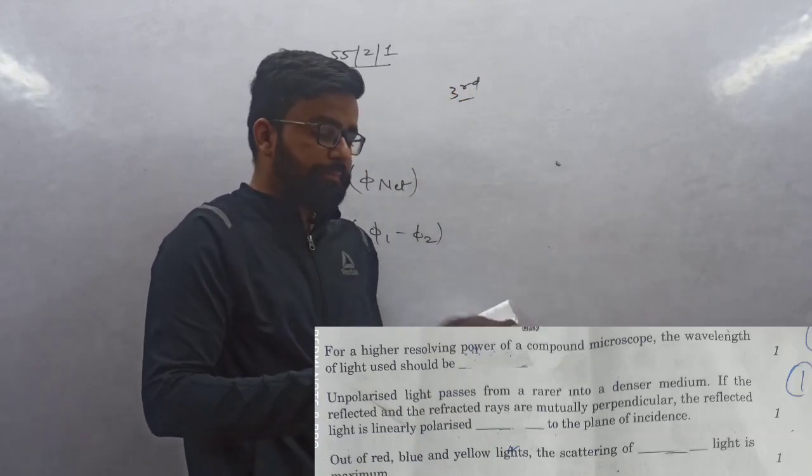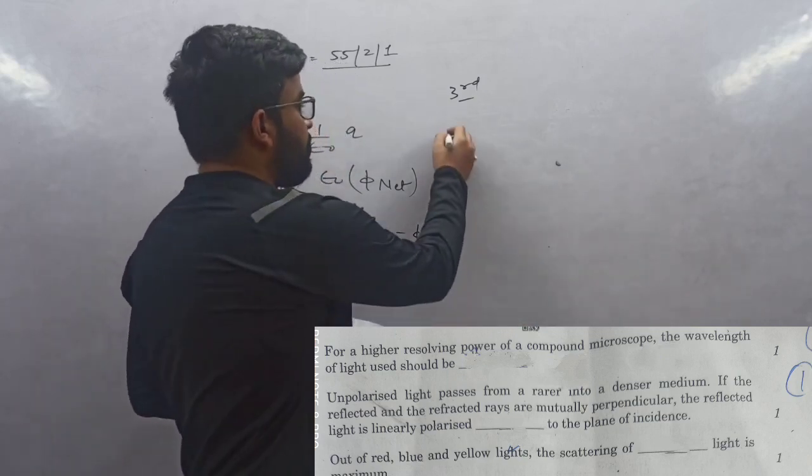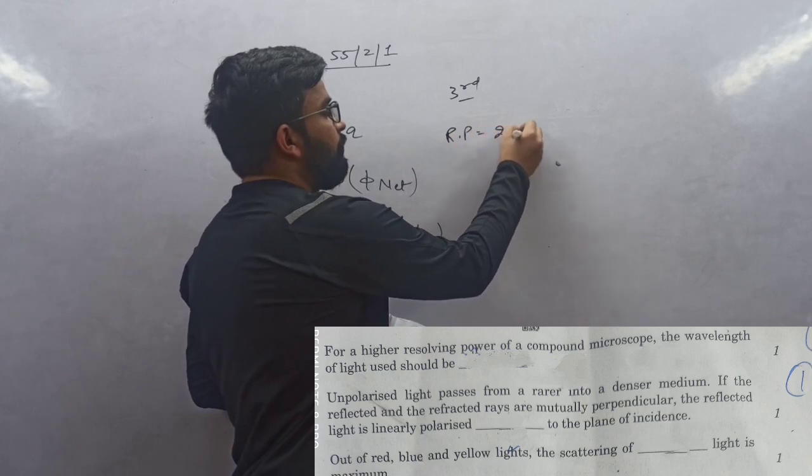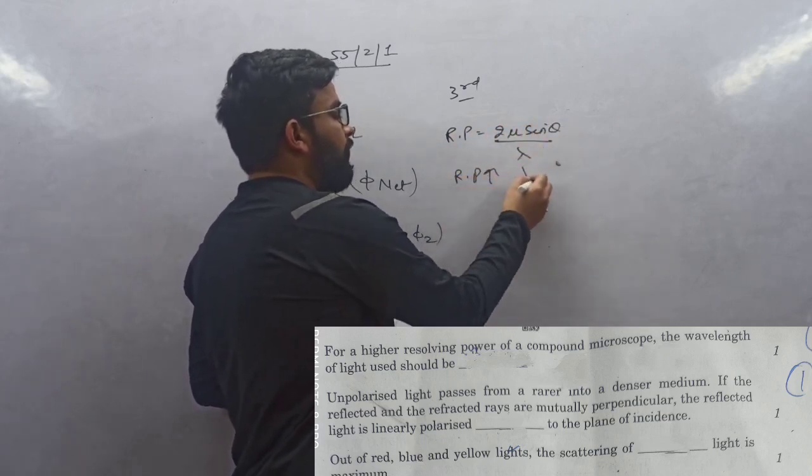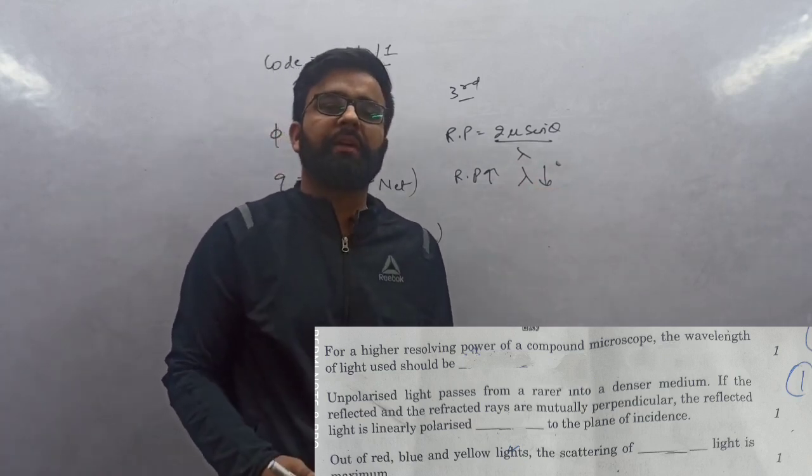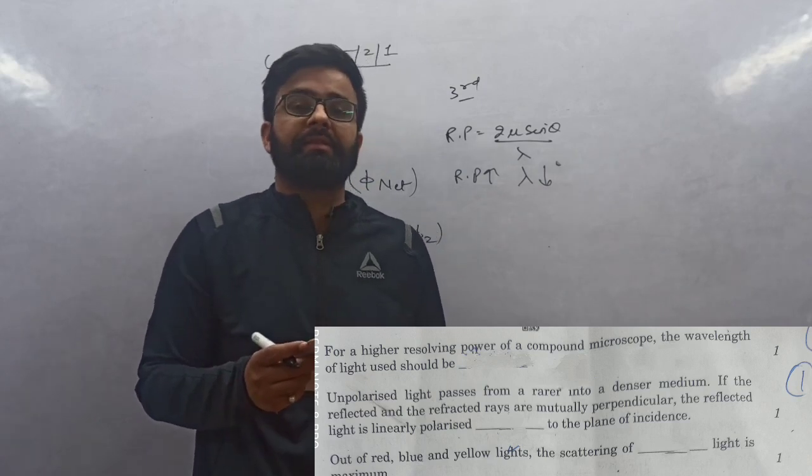Question 13: Resolving power of compound microscope is 2μ sin θ/λ. If we want to increase resolving power, we have to decrease λ. We have to decrease lambda, for that the wavelength of light should be decreased.